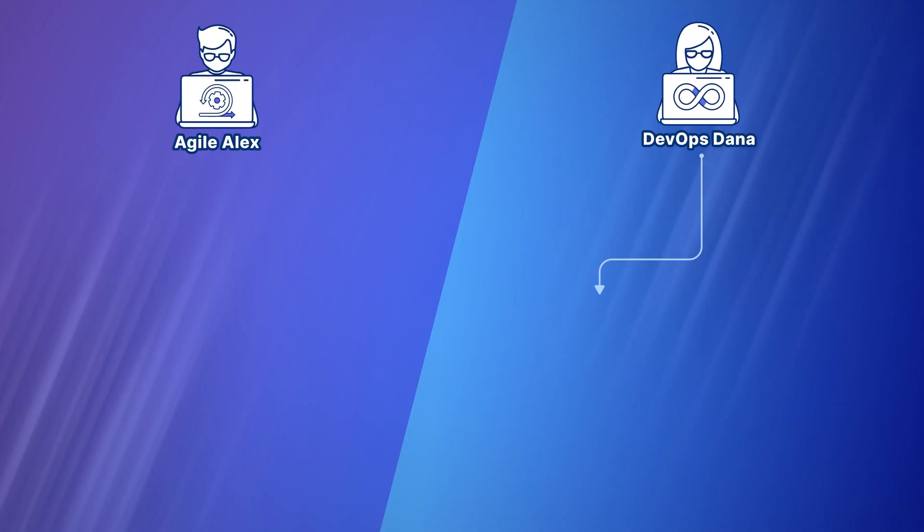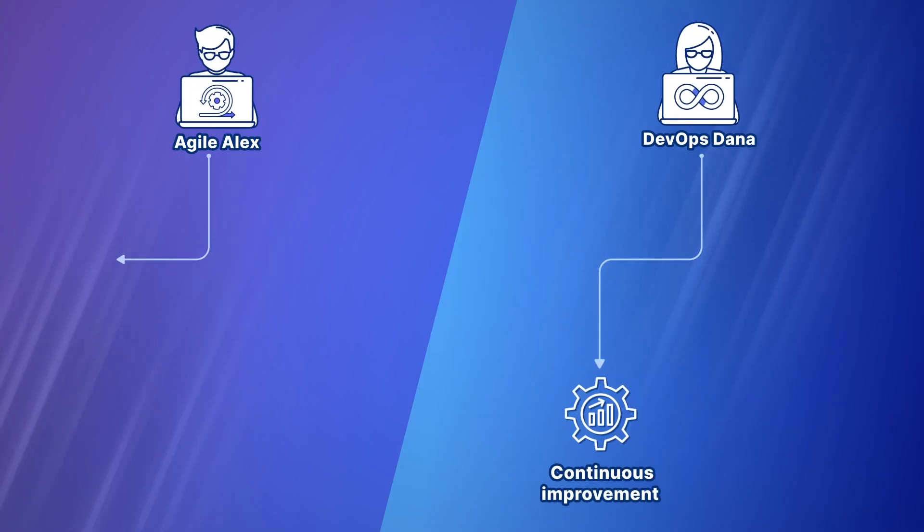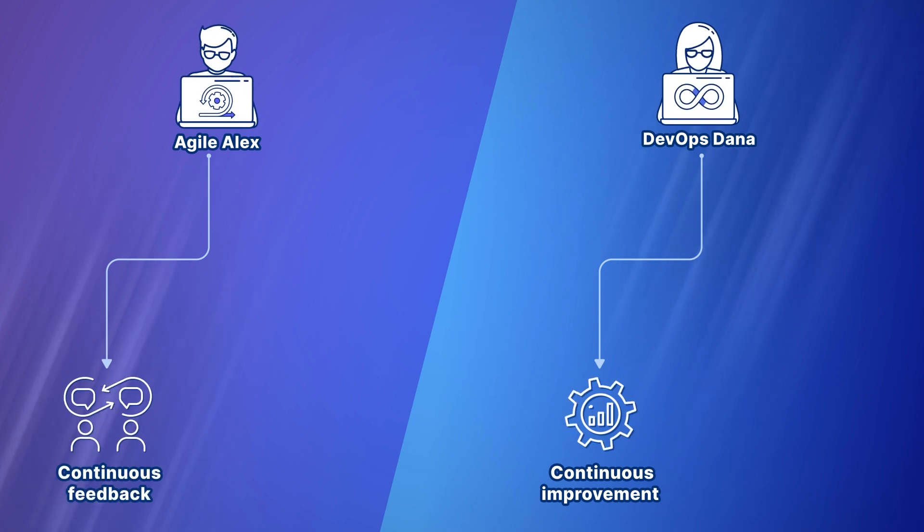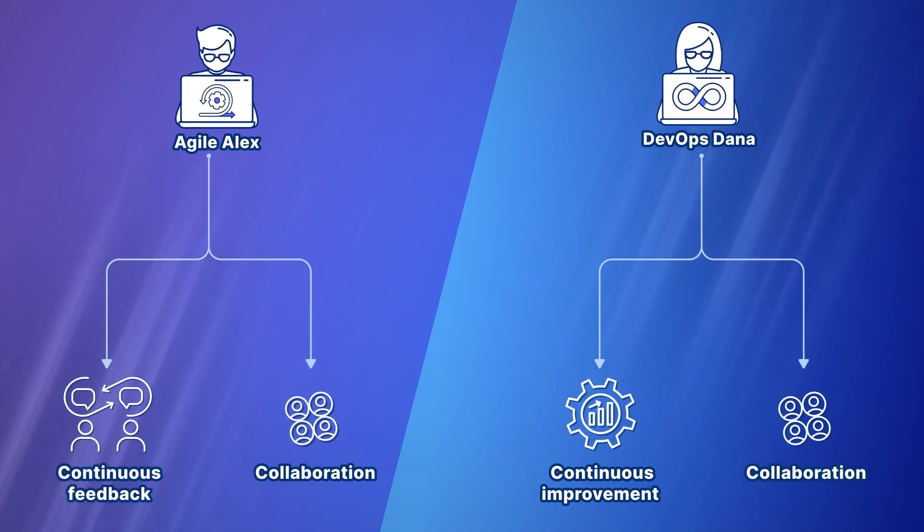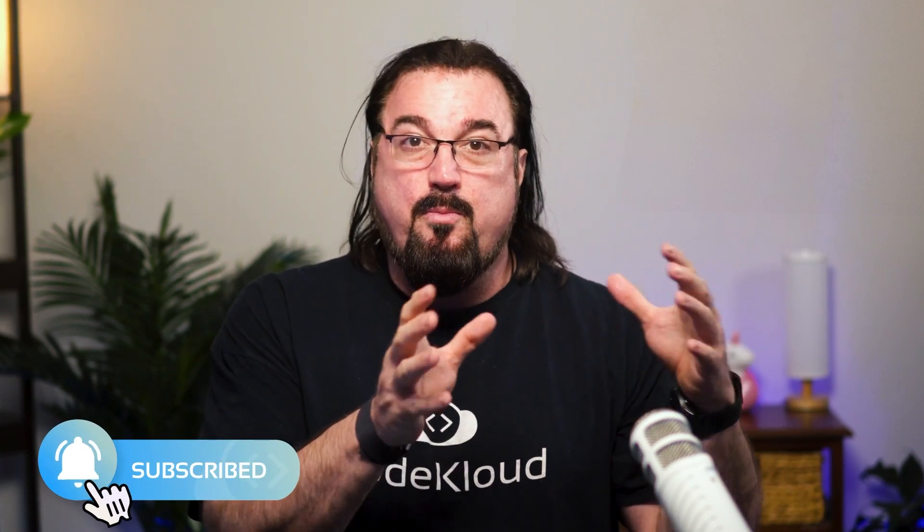DevOps is all about continuous improvement and feedback loops, and Agile is also big on continuous feedback. Both frameworks emphasize collaboration. You could argue that DevOps actually fits inside of Agile because DevOps is concerned with the last mile of repo-to-production delivery, whereas Agile covers the whole thing — particularly the pieces around how to design, build, code, and test software, getting the right requirements, and delivering a minimal viable product, which is also part of DevOps thinking as well.